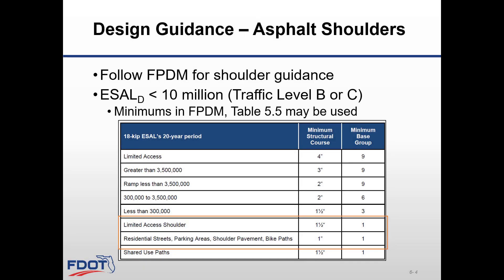For limited access shoulders and for low volume roadways where design ESALs are less than 10 million — traffic level B or C — you could design your shoulders using the minimum values shown in the Flexible Pavement Design Manual, Table 5.5.